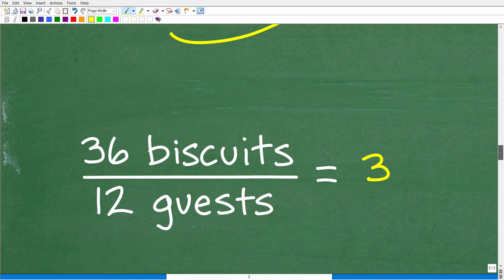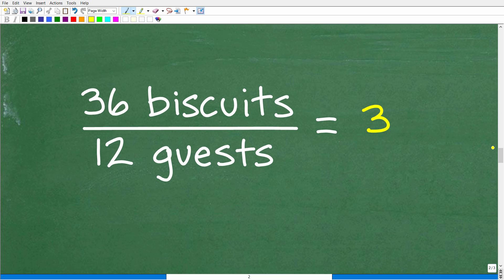So this is pretty straightforward, right? So if we had 36 biscuits - so actually it was 42, but these 12 guests ate 36 biscuits. How many, on average, how many biscuits did each guest eat? Well, it's going to be 36 divided by 12, which of course is three. So on average, each guest ate three biscuits. So pretty straightforward.